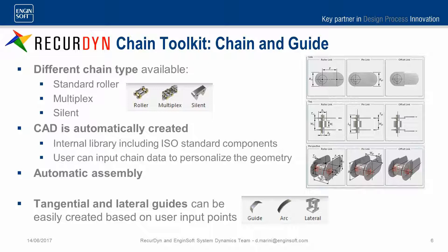The creation of chain elements is very similar to the creation of sprockets. A specific set of icons gives access to different types of chains, such as standard chain, multiplex chains, and silent chains. The geometry can automatically be created based on an internal library, or the user can input their own parameters to personalize it. Moreover, the chain can automatically be positioned based on the position of the sprockets, and the sprockets can automatically be oriented to properly engage with the chain once it is created.